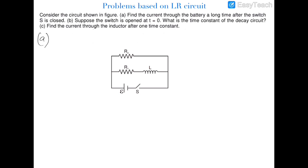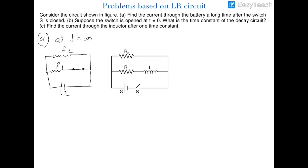At t = ∞, the current in the circuit becomes saturated, there is no voltage drop on the inductor, and therefore we can short-circuit the inductor. Redrawing the circuit with the inductor shorted: R2 and R1 are in parallel, their equivalent resistance is R1·R2/(R1+R2), and the current through the battery equals E divided by that equivalent resistance, which gives E(R1+R2)/(R1·R2).